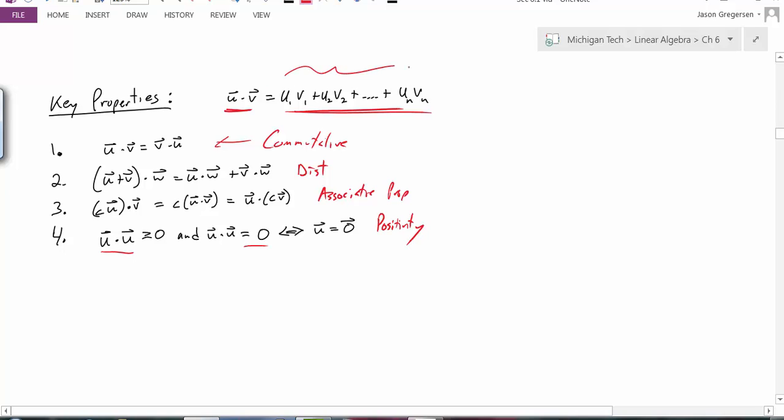But in this form, I can see that u_1 times v_1—this is just the product of two real numbers. And I do have the commutative property of multiplication for real numbers, which says that's the same thing as v_1 times u_1. And I could do that in each case because I have that property for real numbers.